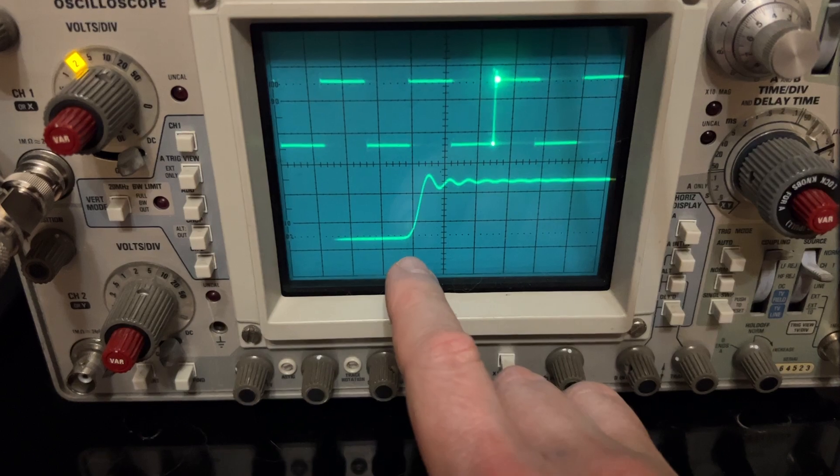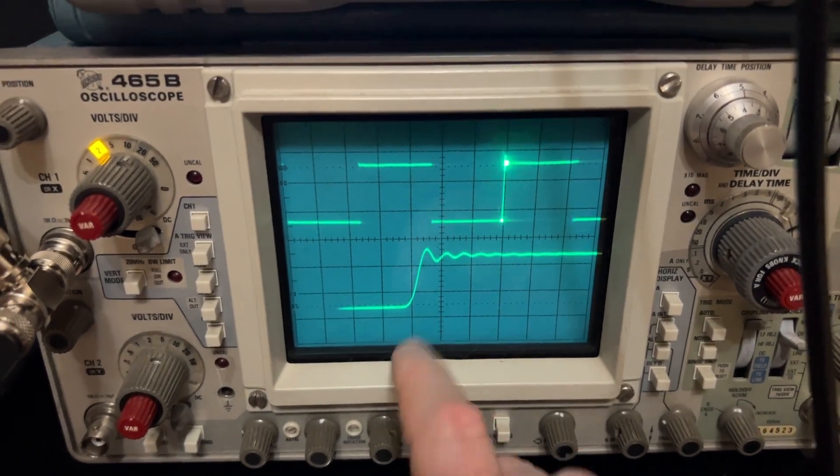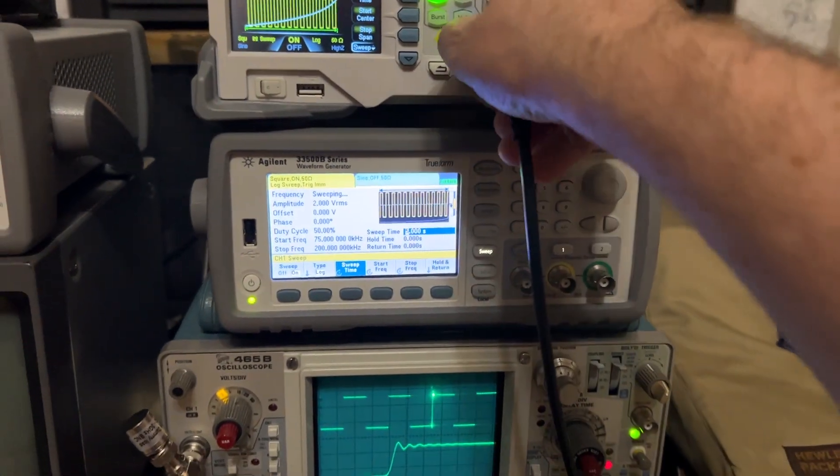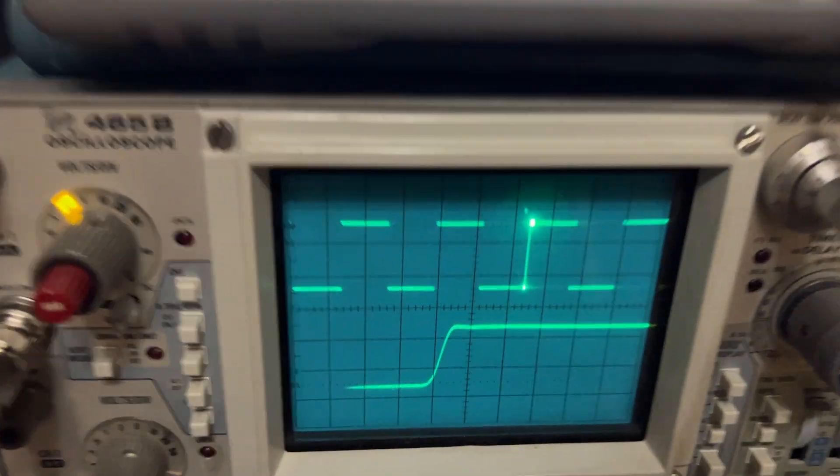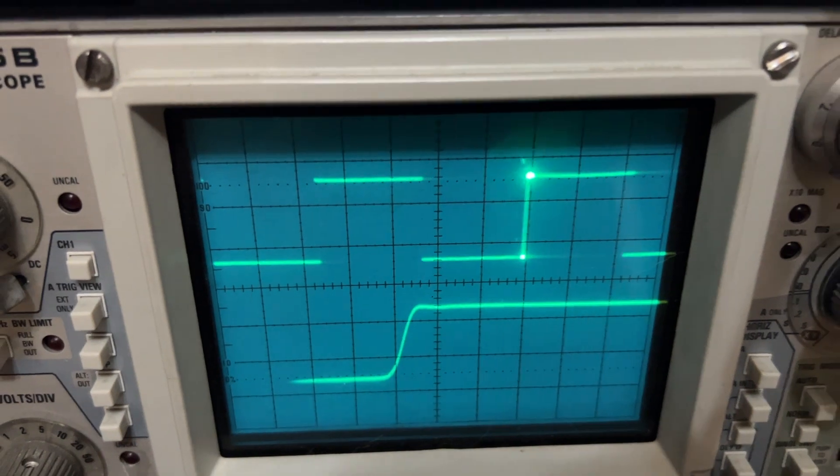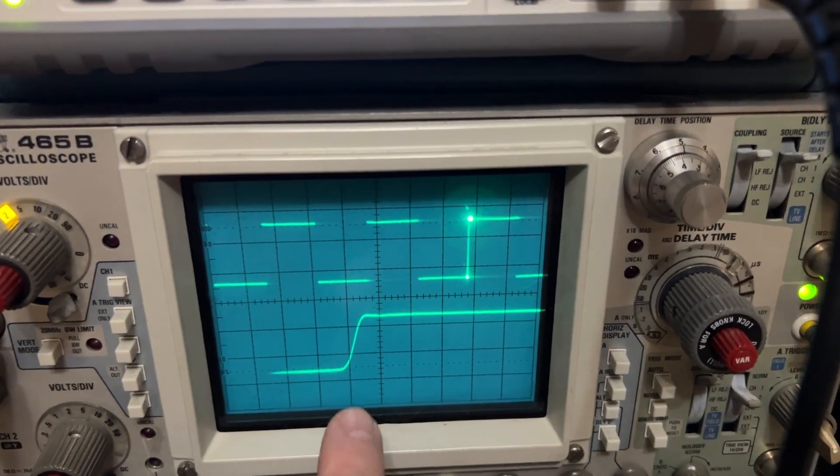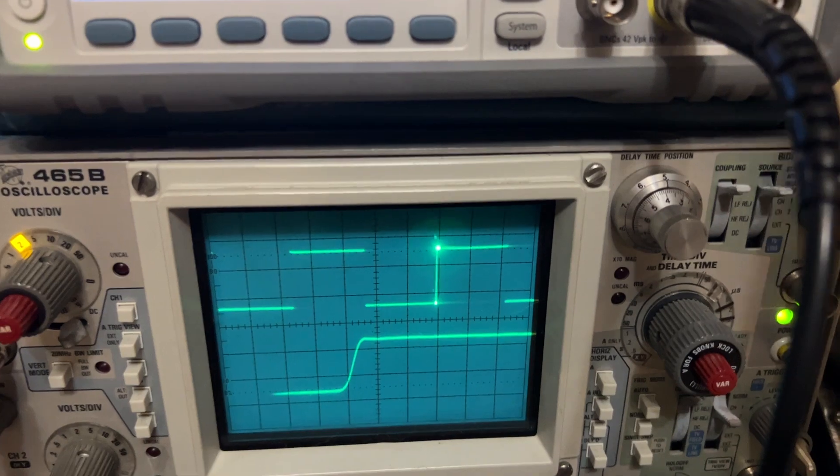This is about a 9 nanosecond rising edge. The interesting difference is if I take the jack and plug it into the Agilent, you also have about a 9 nanosecond rising edge, but you can see there's much less overshoot and ringing in this instrument.